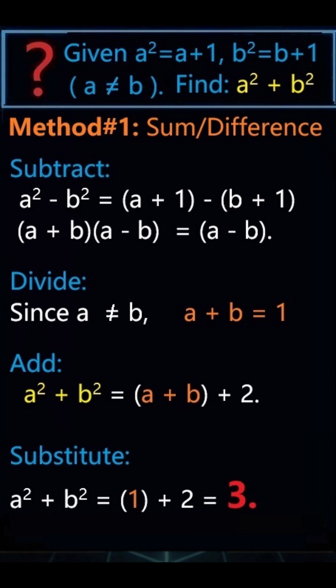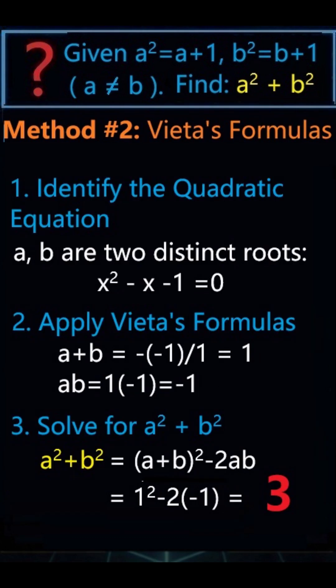Method 2: Vieta's formulas. a and b are two roots of x square minus x minus 1 equals 0. So a plus b equals 1, and a times b equals negative 1.